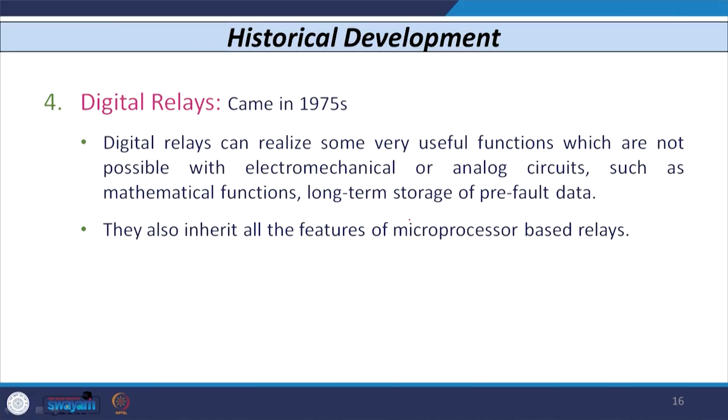The fourth generation — digital or numerical relays — came to market in 1975. They have special functions including various mathematical functions and they provide long-term storage for pre-fault data as well as post-fault data. They also inherit all the features of microprocessor-based relays, so all features from earlier versions are available in digital or numerical relays.